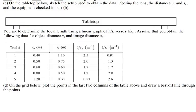For the next question in this FRQ, they ask on the tabletop below sketch the setup used to obtain the data, labeling the lens, distance SO, distance SI, and the equipment checked in part B. So you would have to do, let's retraw again what we just did.